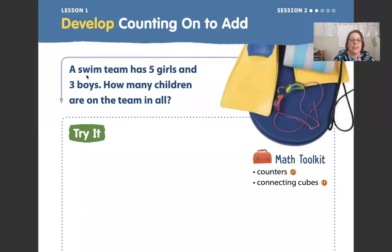Here we go. It says, a swim team has five girls and three boys. How many children are on the team in all?